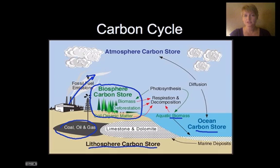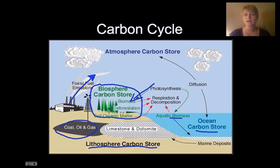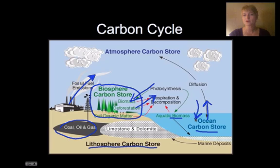We put carbon back into the atmosphere through fossil fuel emissions — burning oil, gas, and coal. Photosynthesis uses carbon, bringing it into the biosphere, but we breathe and that puts carbon back into the atmosphere. We also have diffusion from the ocean — it goes back and forth — so carbon just cycles around throughout our atmosphere and land.